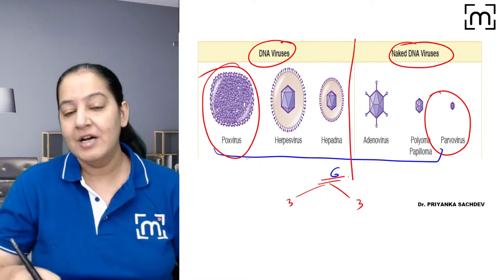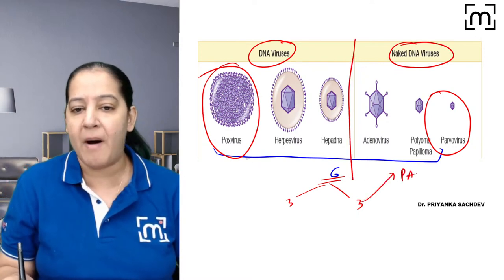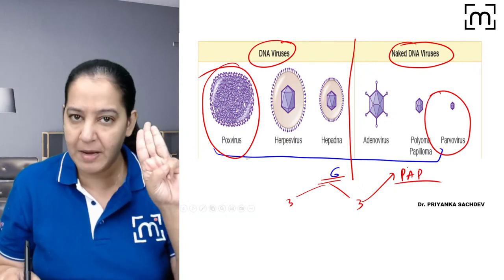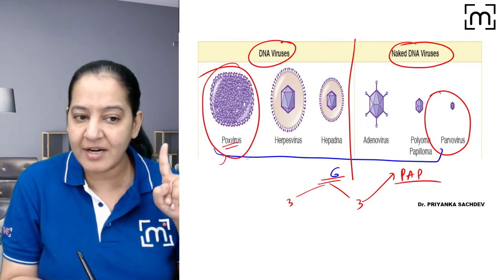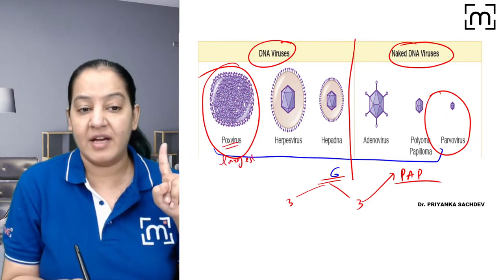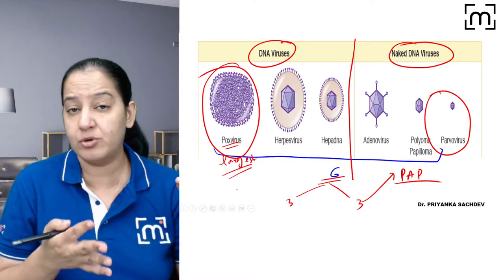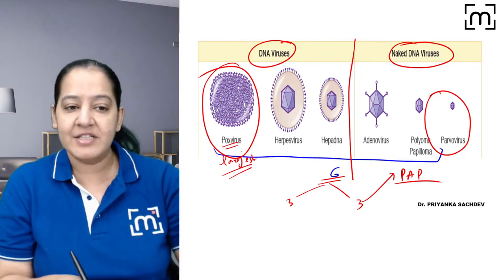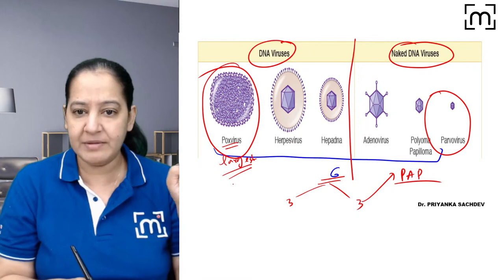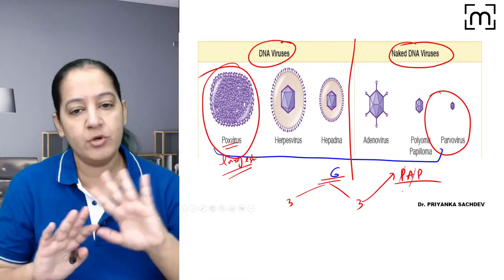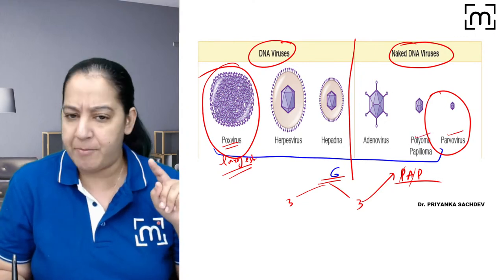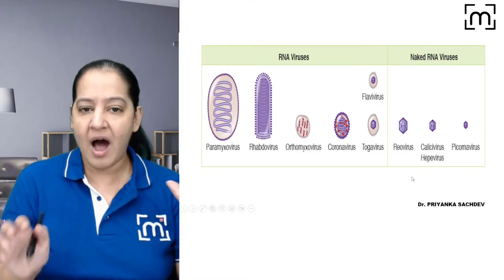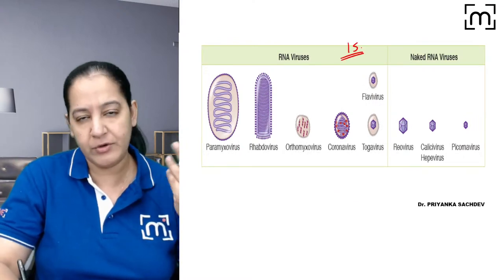Among the six DNA viruses, three are enveloped and three are non-enveloped (naked). Learn the non-enveloped ones using the mnemonic 'POP' — Parvo, Papova, and Adeno are the naked ones. Pox is the largest, and it is enveloped. So Parvo, Papova, and Adeno don't have an envelope; the remaining three do.